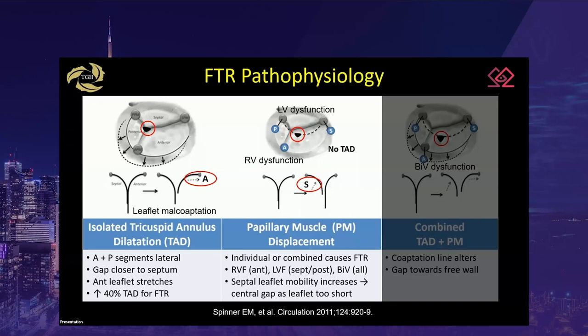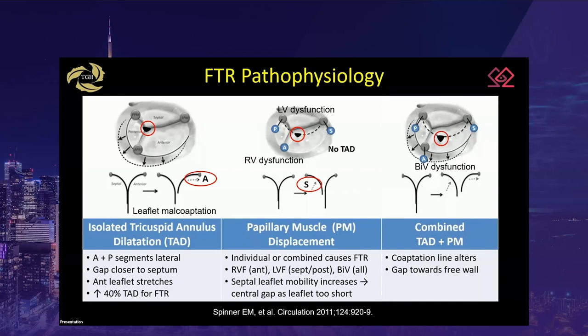In septal or posterior papillary muscle displacement, the septal leaflet mobility increases, creating a central malcoaptation because the septal leaflet is too short. In a mixed picture of annular dilatation and all papillary muscle displacement, the coaptation line shifts towards the free wall.